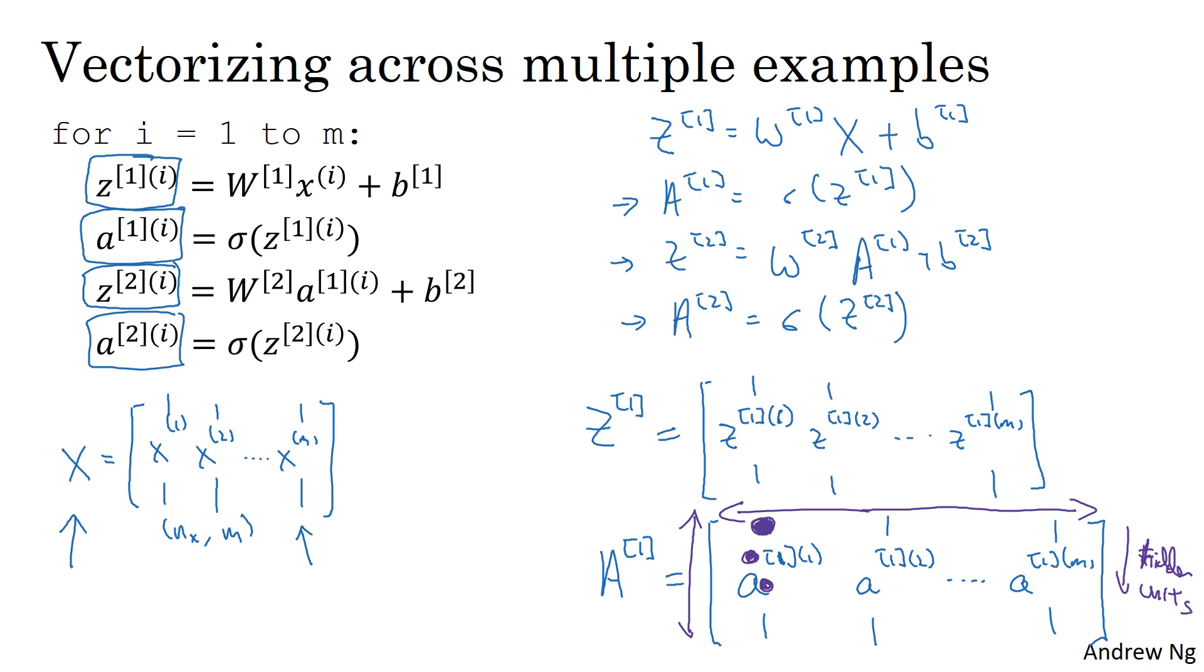For example, one value down corresponds to the activation in the second hidden unit on the first training example, then the third hidden unit on the first training example, and so on. So as you scan down, this is indexing into the hidden unit number. Whereas if you move horizontally, then you're going from the first hidden unit in the first training example to now the first hidden unit in the second training example, the third training example, and so on. So the horizontal, the matrix A goes over different training examples. And vertically, the different indices in the matrix A corresponds to different hidden units.